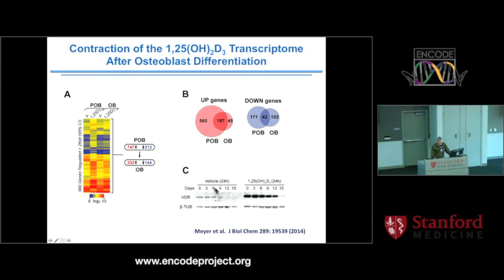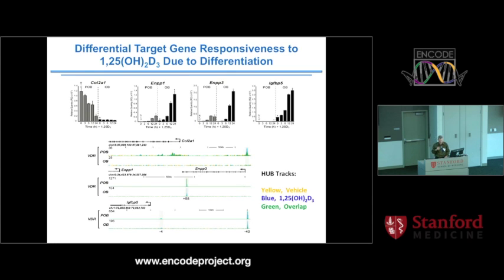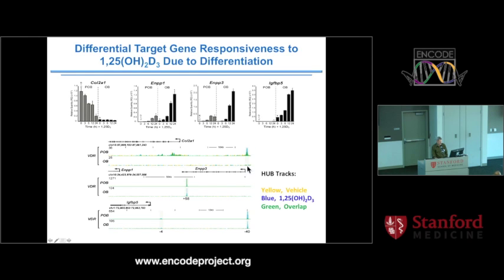What was surprising was that we found a fairly large collection of those 400 genes which showed differential target gene responsiveness to 1,25-D3 that was entirely due to differentiation. For example, the gene 2A1 is downregulated in precursor cells but relatively resistant to 1,25 action when cells are mature. Looking at the ChIP-seq track, there's a very strong vitamin D receptor binding peak in precursor cells that is almost completely obliterated when the cells are mature, which accounts for the lost responsiveness.